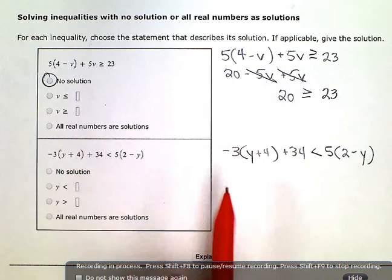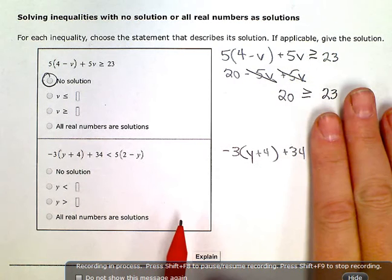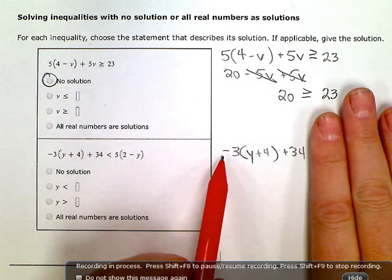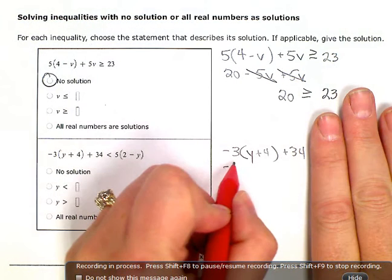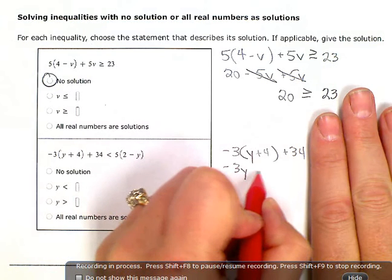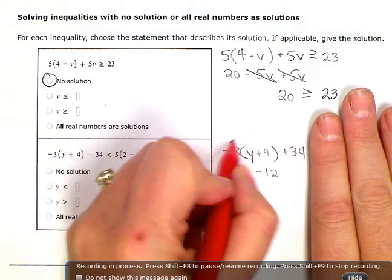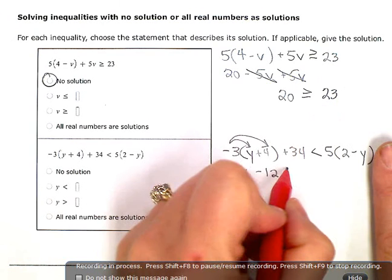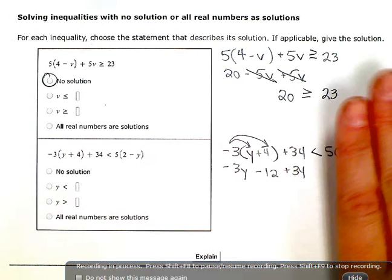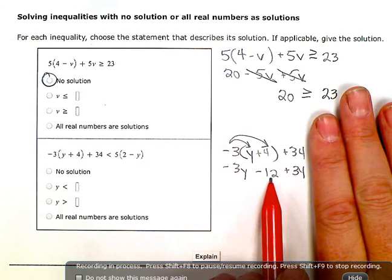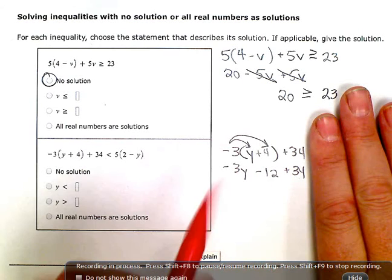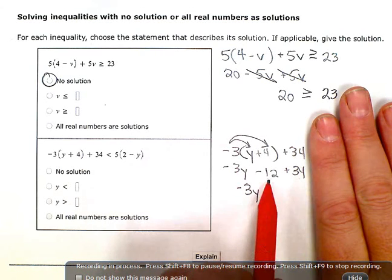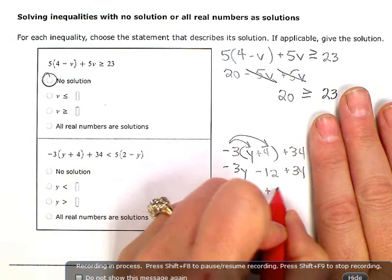so here, again, treat each side as its own little miniature problem to start with. So I'm going to distribute negative 3y minus 12, doing negative 3 times both of those terms, and then plus 34. And then let's see. I only have one y term, but I have two constant terms that I can combine. So I have negative 3y, and 34 minus 12 is 22.